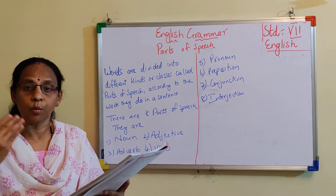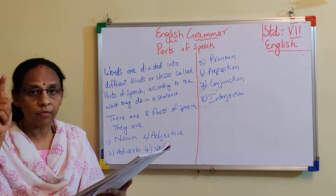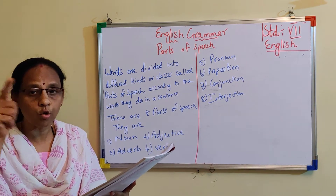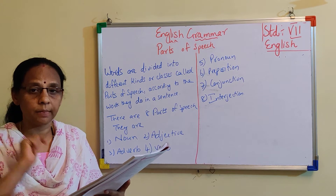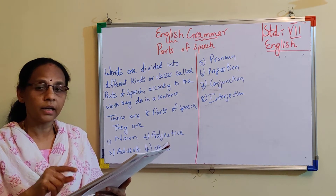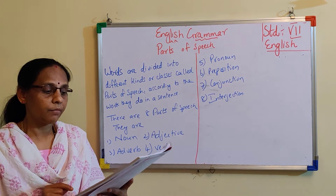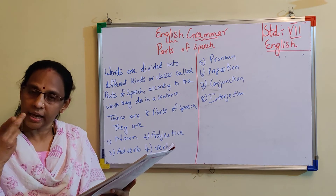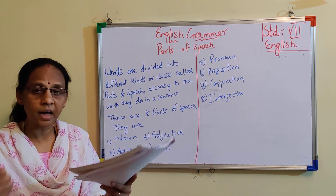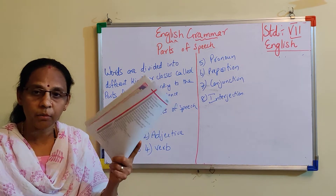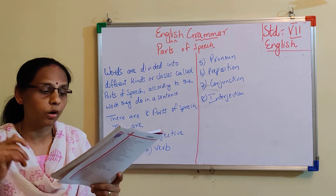Adverb means it tells more about a verb. Words ending in -LY: slow becomes slowly, costly, luckily. Then verb means doing any kind of action. For example, 'The boys are running.' Running means doing a kind of action — that is the verb.